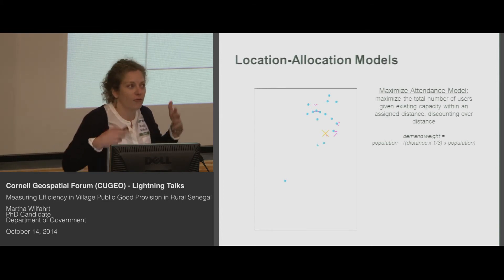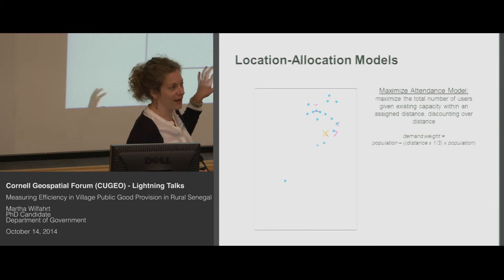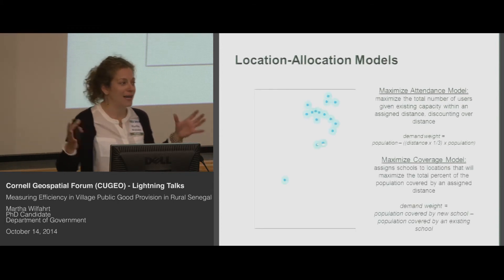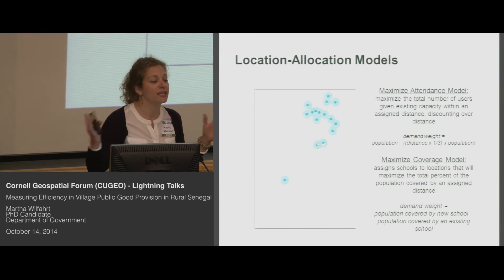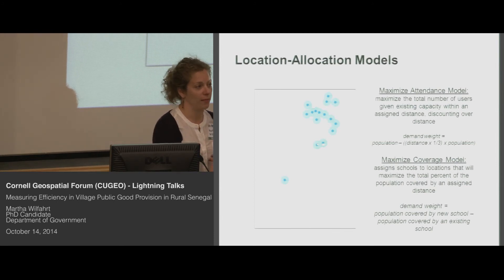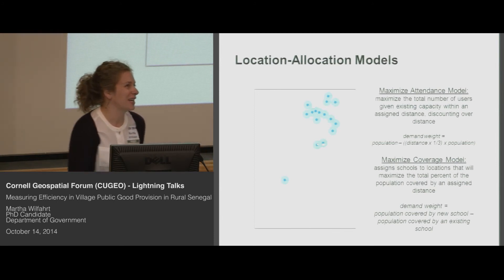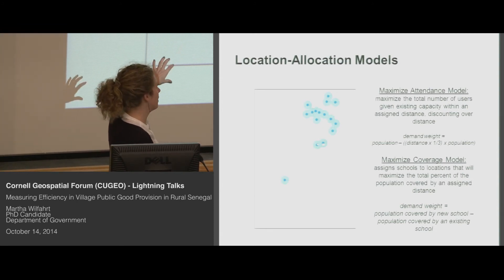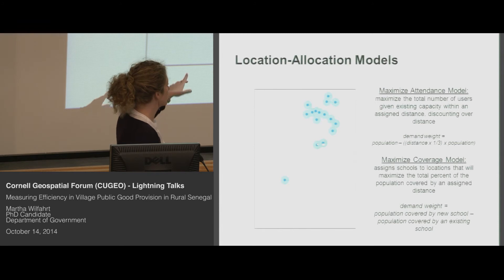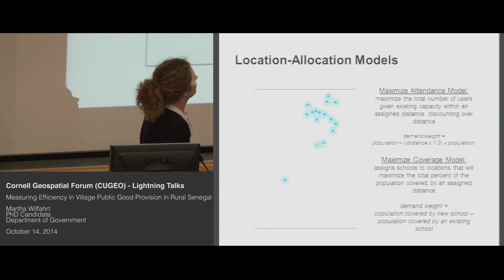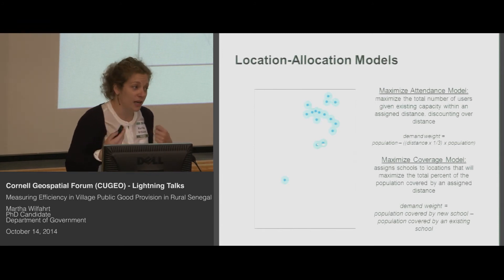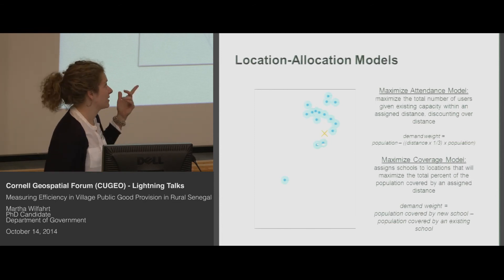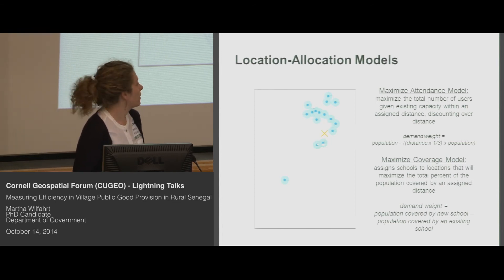Alternatively, we might think that the ideal point is not just about maximizing attendance, but about maximizing coverage — maximizing in absolute terms the percent of the population that's within three kilometers — because this might help them meet the Millennium Development Goal objectives set for them. So here I draw buffers of three kilometers around the existing schools and villages without a school, which are the gray buffers. It then chooses the village that's going to most likely maximize this, and again it selects the village of Ida, which does receive a school in the center.